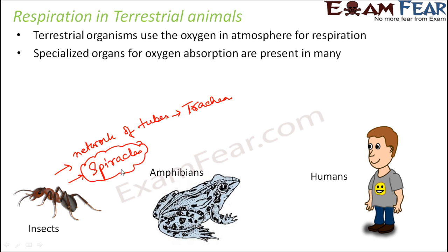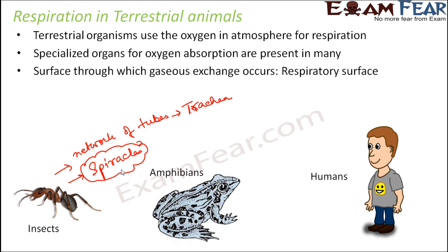When you think of amphibians like frogs, they do not have any specialized organ for oxygen absorption. Instead, their skin acts as the respiratory surface. Amphibians have a very slimy skin through which the exchange of gases can happen. This is also true for many other animals that lack a specialized respiratory organ.